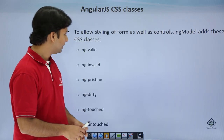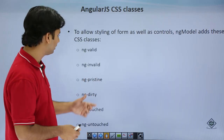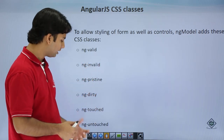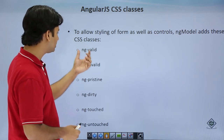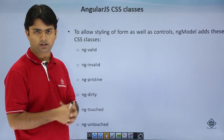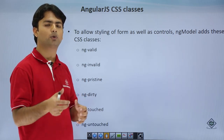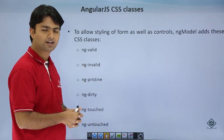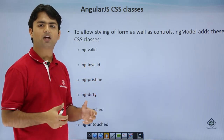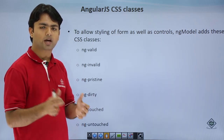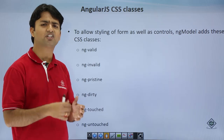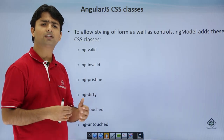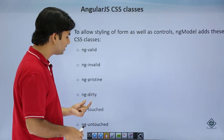Let's look at the CSS classes provided by AngularJS: ng-valid, ng-invalid, ng-pristine, ng-dirty, ng-touched, and ng-untouched. The ng-valid class is active whenever the entered value is valid, but as soon as you put any invalid value you get the ng-invalid class. Similarly, if you have created a text box or a form and haven't changed the value even once, it will be ng-pristine, but as soon as you change the value at least once it will be ng-dirty.